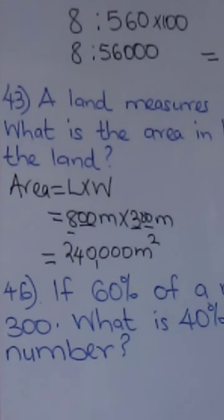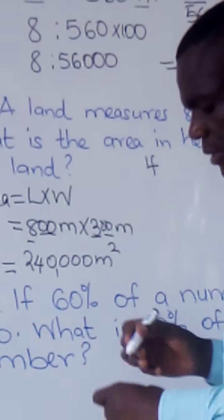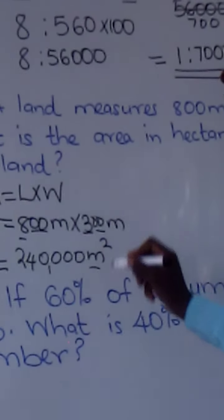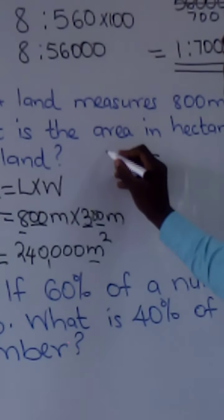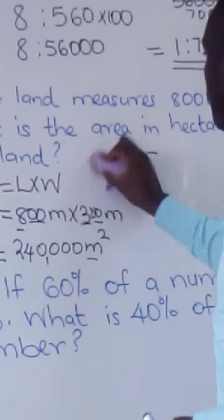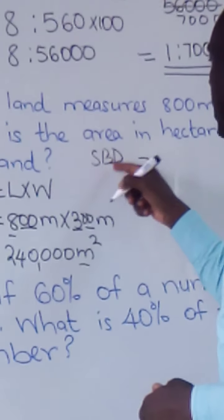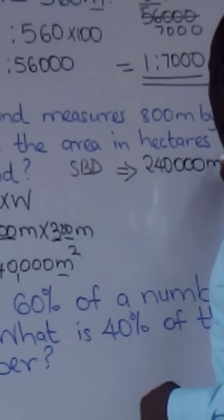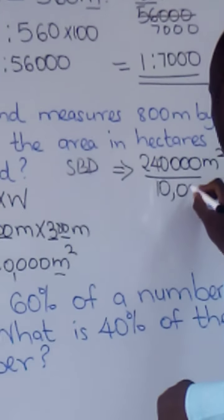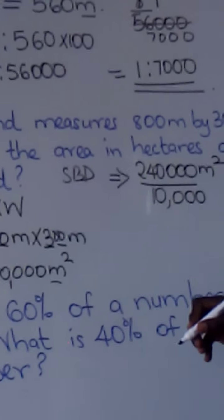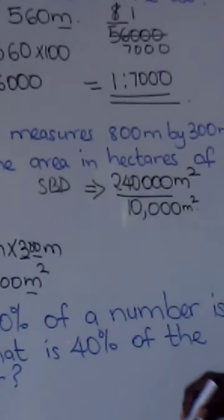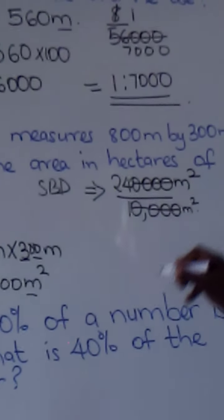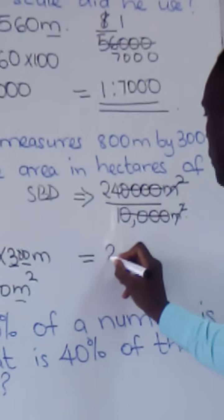Now we convert to hectares. Going from smaller to bigger, we divide. So we take 240,000 square meters divided by 10,000 — because 10,000 square meters make one hectare. The four zeros cancel, leaving 24. The answer is 24 hectares.